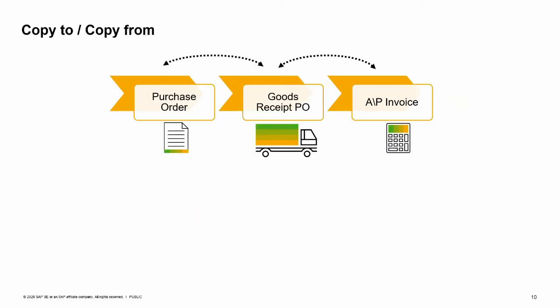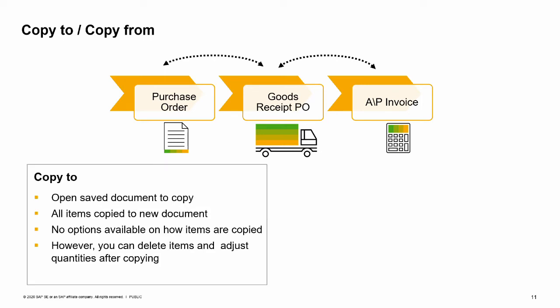Purchasing documents build on each other. Often a purchase order becomes a goods receipt PO that records the vendor's delivery, and finally an AP invoice when the vendor's bill is received. You can quickly copy a document to the next document in the sequence using the copy to button. The original document is called a base document. The document you create from it is called a target document. Building one document from another saves time and effort, and also reduces the possibility of errors. When you use the copy to function, all items are copied to the new document, with no options on how items are copied.